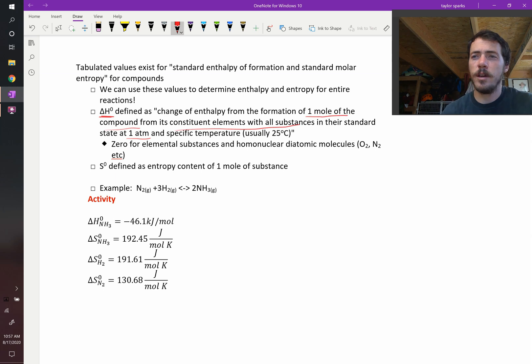If you're calculating delta H zero, you should know that it is always going to be equal to zero for elemental substances and homonuclear diatomic molecules like O2, N2, and so forth. Why is that? Because you're talking about the change in energy to form something from how it exists in its standard state.